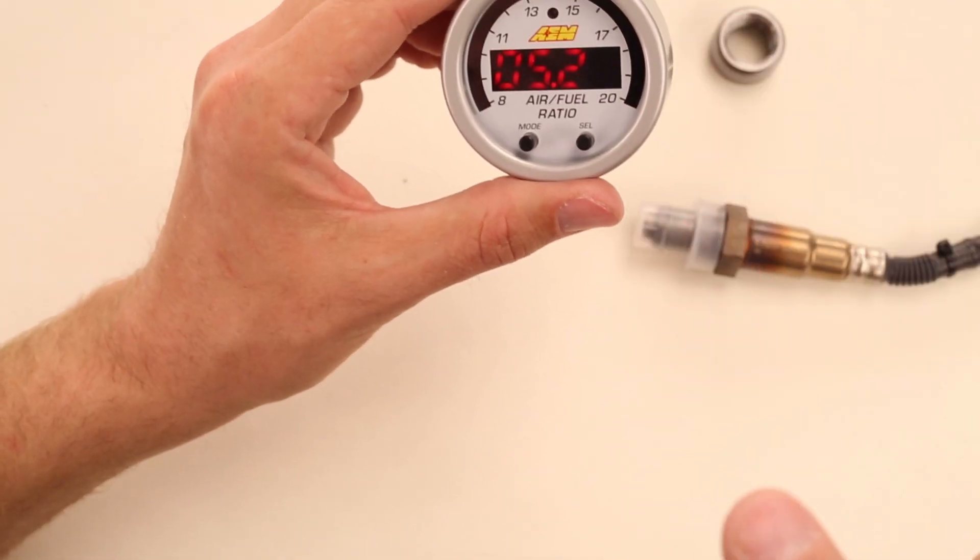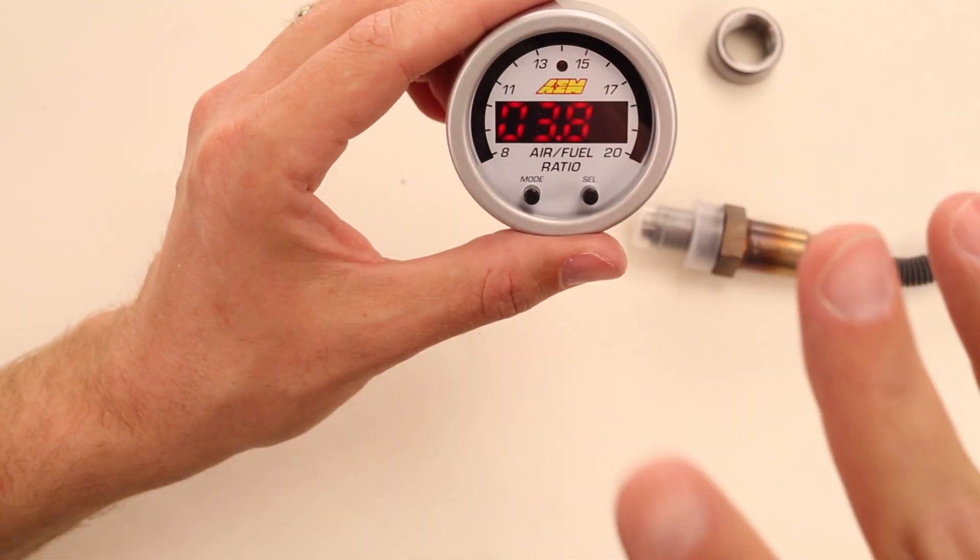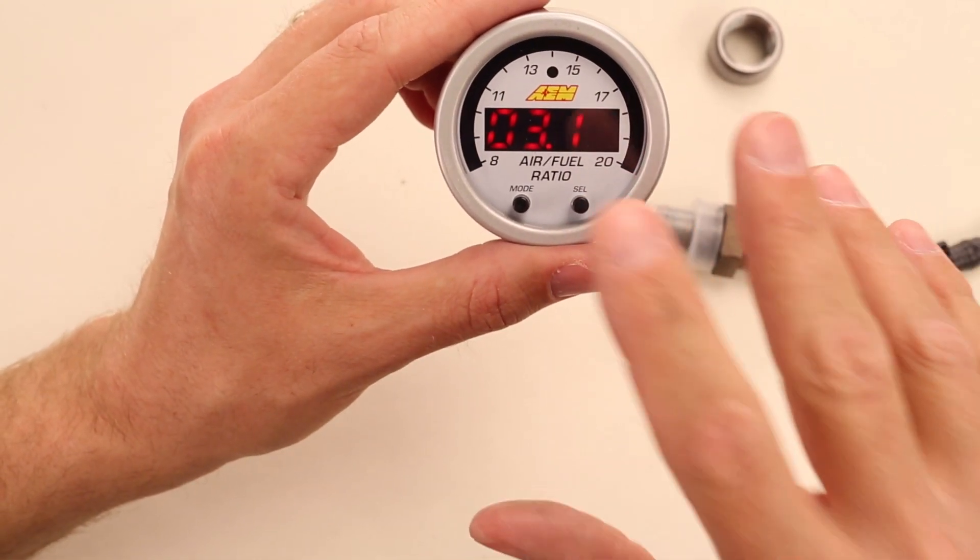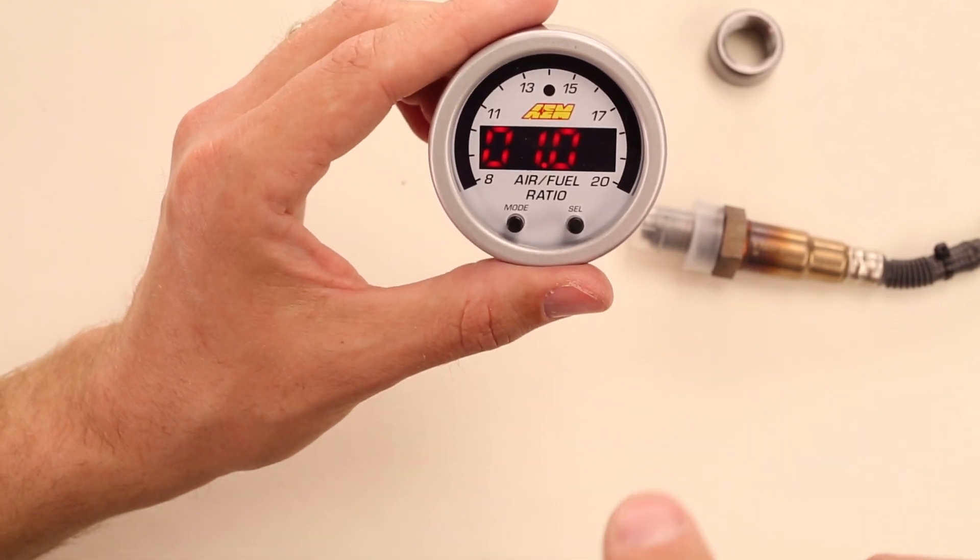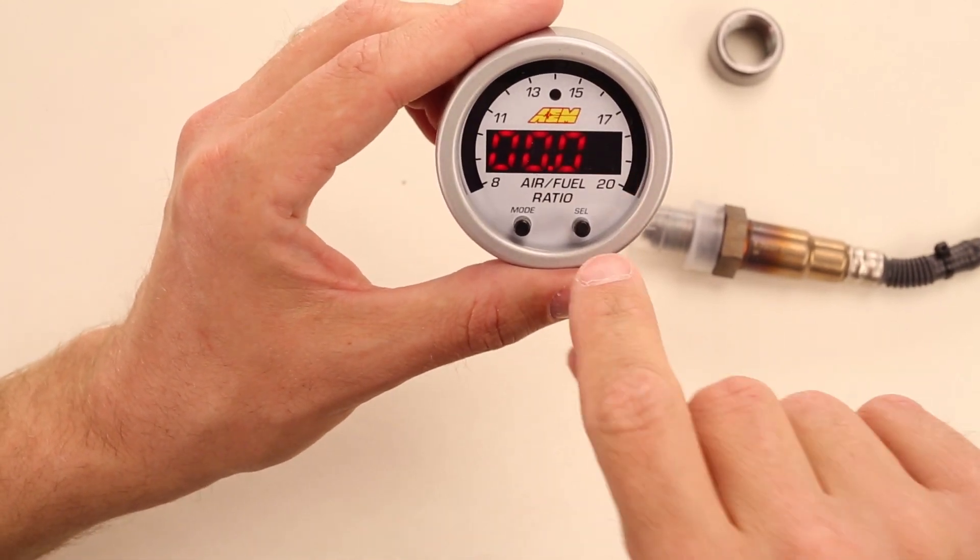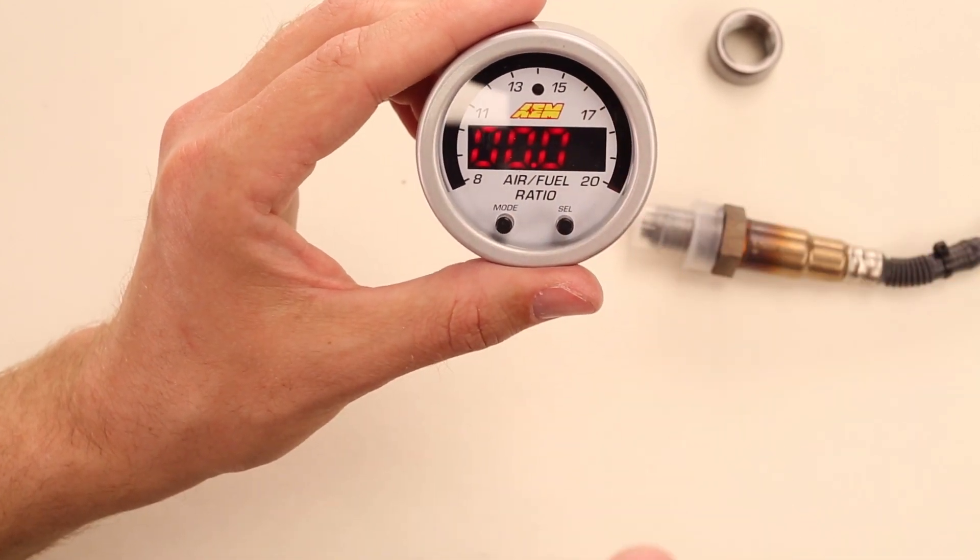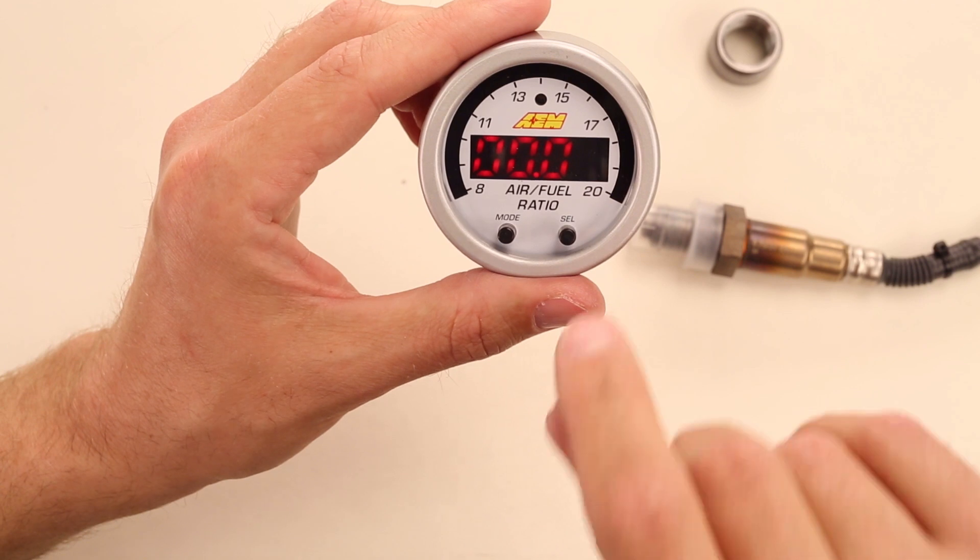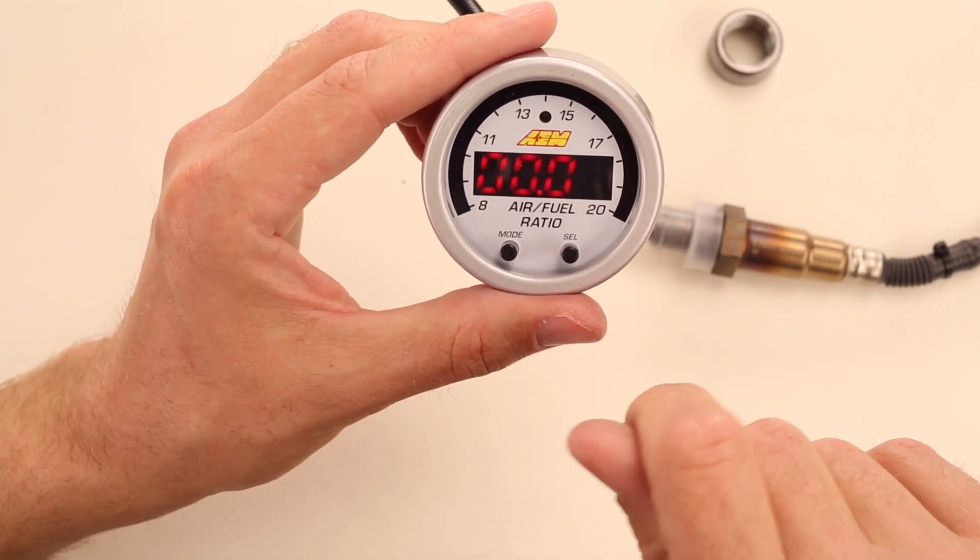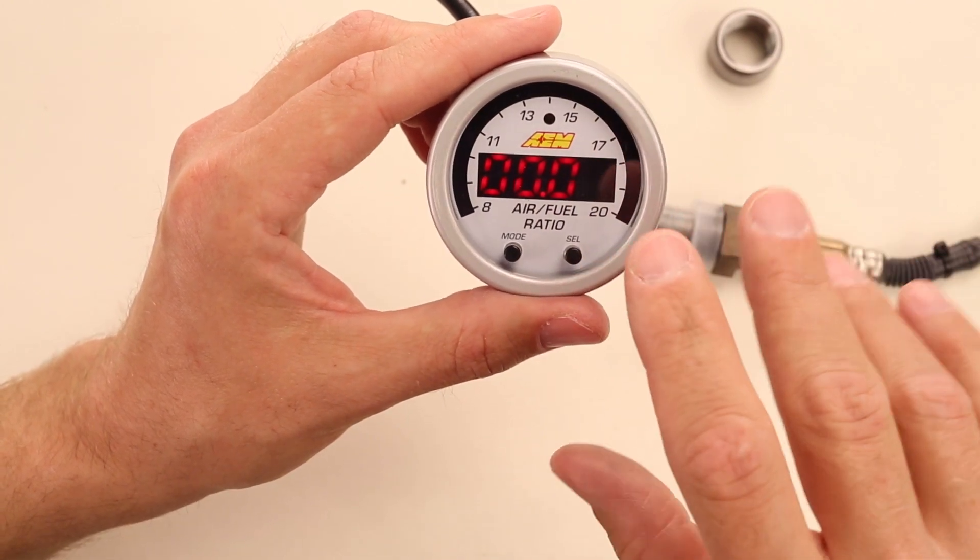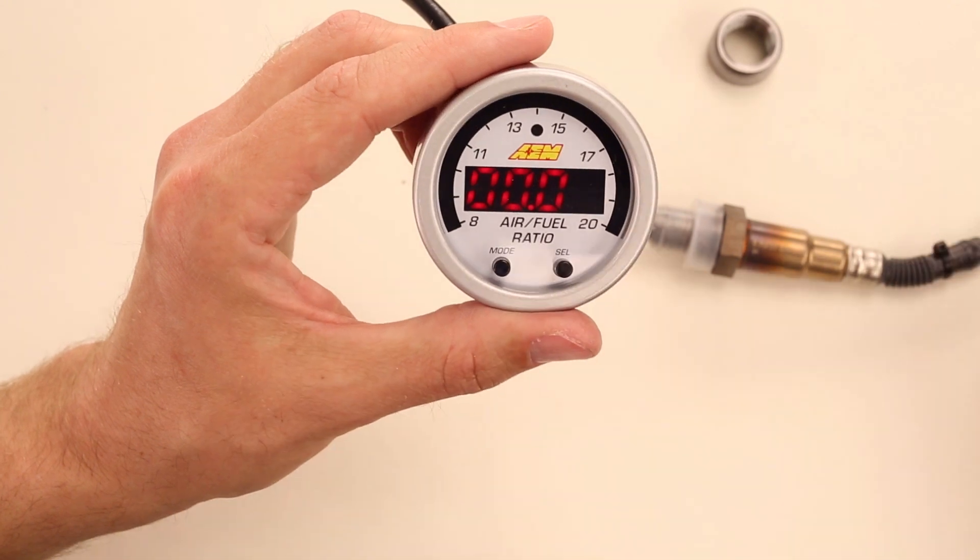So AEM's second generation X series wideband O2 sensor. It's all about precision. It's all about keeping your air fuel ratio perfect. Keeping the combustion ideal and giving you the information that you need to get that perfect calibration or tuning of your engine. And seeing everything from a misfire, from a bad spark plug.